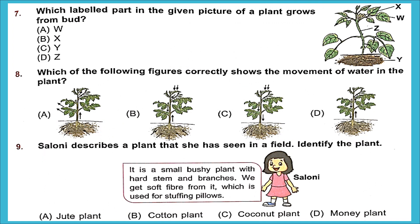Question 7: Which labeled part in the given picture of a plant grows from a bud? A flower develops from a bud. In the picture, W is a leaf, X is a flower, Y is a root, and Z is a stem. The right answer is X because it is the flower.